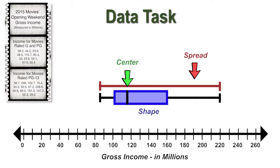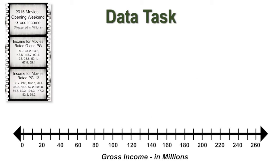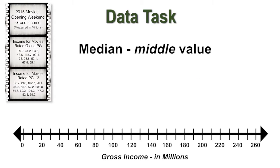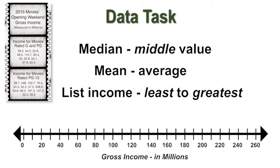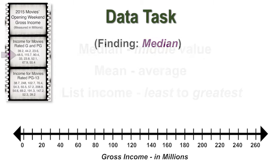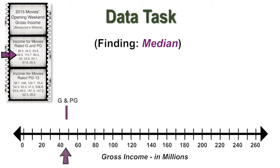Let's begin by finding the center of the data. Students could calculate the center using the median, which is the middle value, or the mean, which is the average. They would first put the incomes in order from least to greatest and place it in a box plot or find the five number summary. The median value for G and PG is $48.5 million. The median value for PG-13 is $63 million.